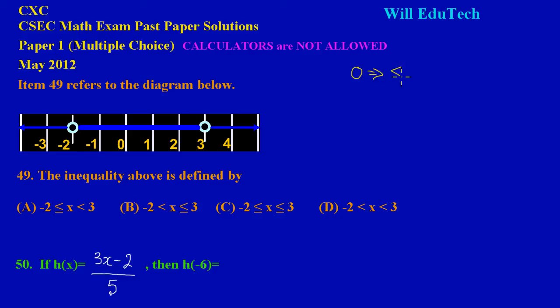So whenever we are using open circles, you would be using the less than sign or the greater than sign. However, when we're using closed circles, meaning that the circles are shaded, whenever you're using a shaded circle you would be using your less than or equal to or your greater than or equal to.